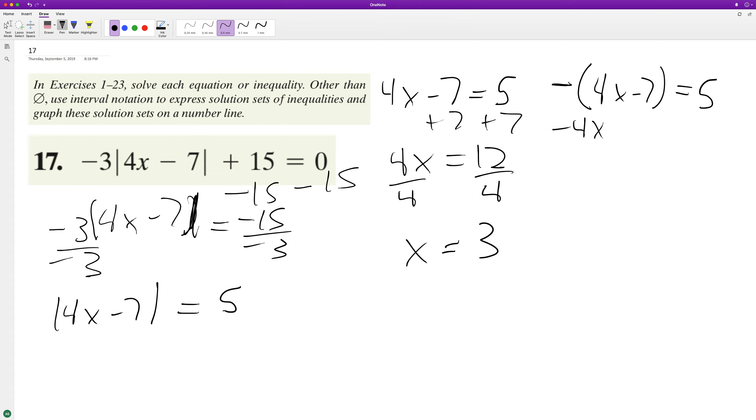Distribute the negative: negative four x plus seven equals five. Subtract seven. Negative four x equals negative two. Divide by negative four. And x is equal to negative one half. Or excuse me, it's two negatives. It's one half. So x is equal to one half and three.